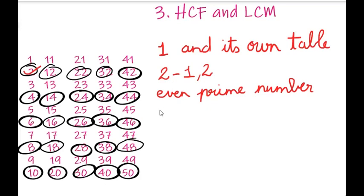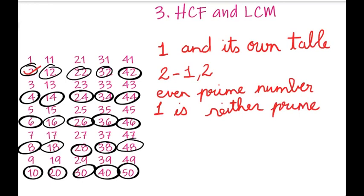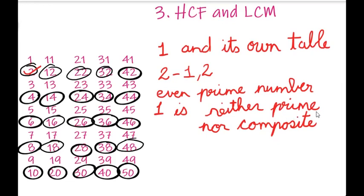Now we will check 1. Students, always remember: 1 is neither prime nor composite. So always keep that in mind. What is meant by composite numbers? The numbers which are not prime are called as composite numbers. Composite numbers have many factors. Since 1 is neither prime nor composite, we will put it in a box.